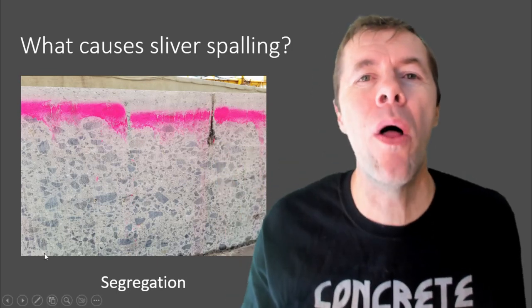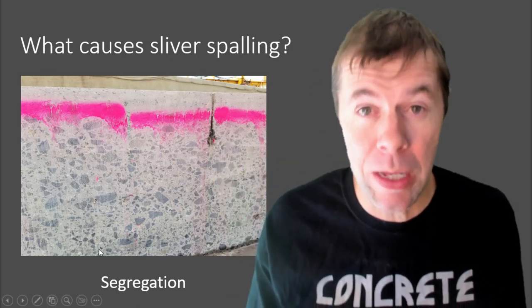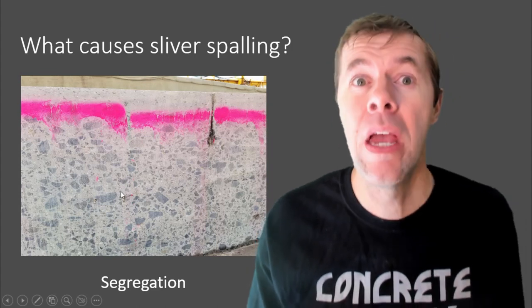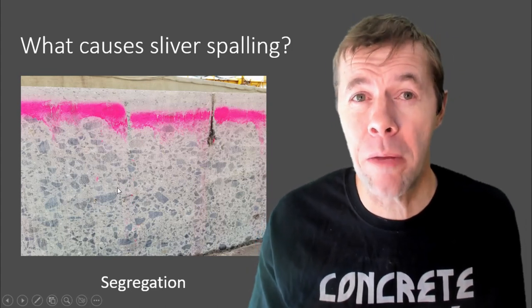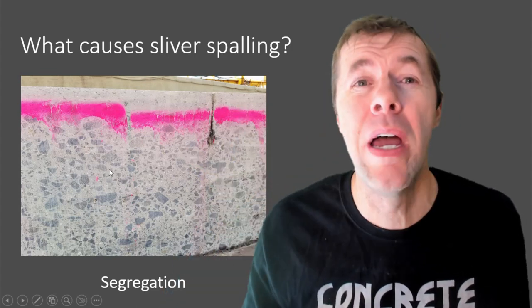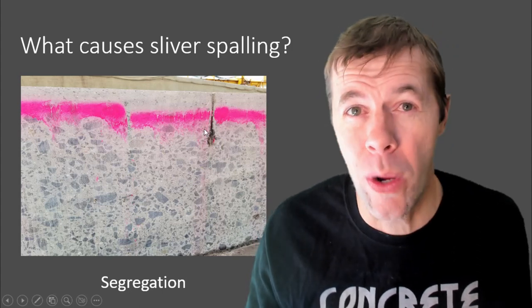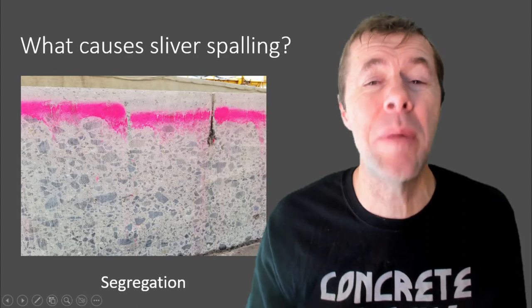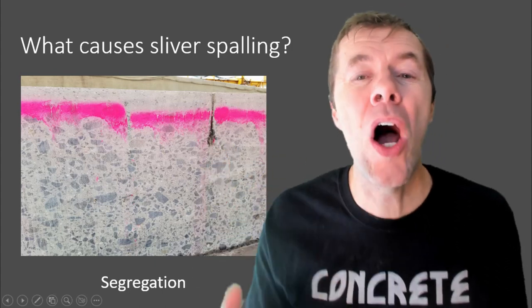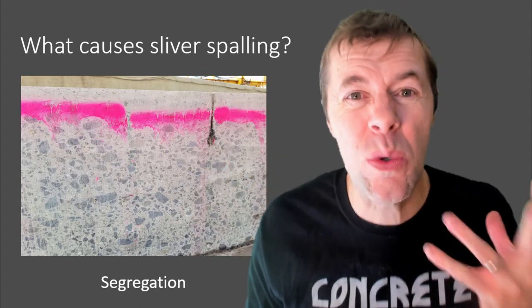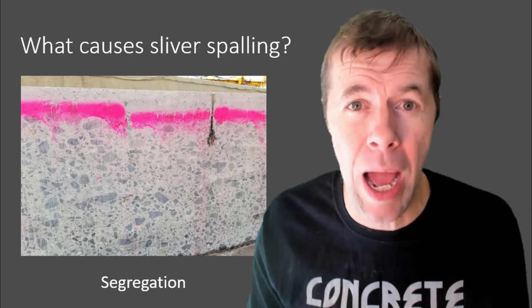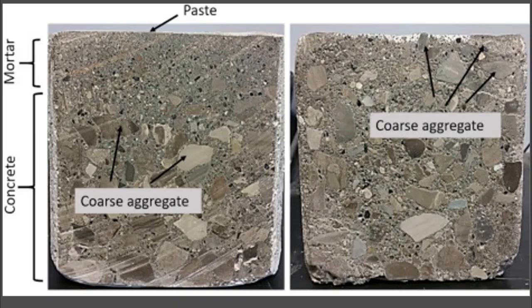Or it could be segregation in the concrete. What am I talking about? Well, look, this is an airfield pavement. Thick sucker, isn't it? See all these rocks down at the bottom? They've all fallen to the bottom. And see up here at the top? This is all mortar that's close to the top. This is a joint, and what this means is since there's not as many rocks at the top, it's not going to be as durable. It's not going to resist cracking or other problems that might happen in the surface of your concrete.